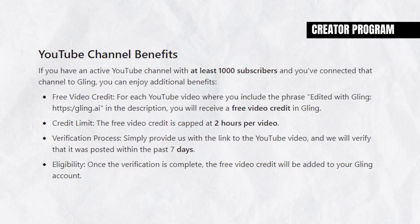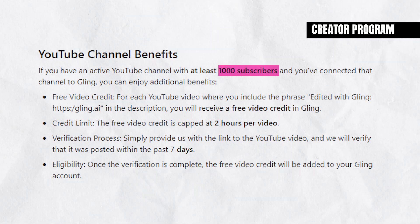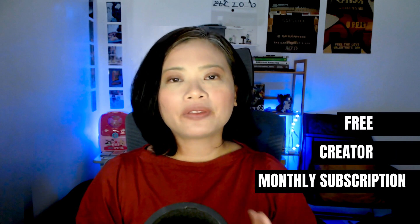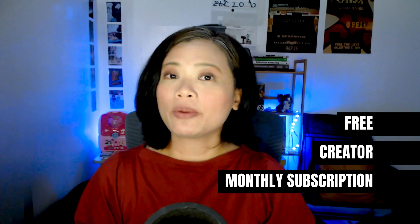While Gling's free feature might be limiting, they actually offer a creator program where you can use Gling for free — but you need at least 1,000 subscribers to qualify. It's easy to apply as part of the upgrade process. So you can either upgrade to the monthly subscription or apply for the creator program. They just have the free version, the creator program, and the $15/month subscription, which makes it super simple to choose a plan.